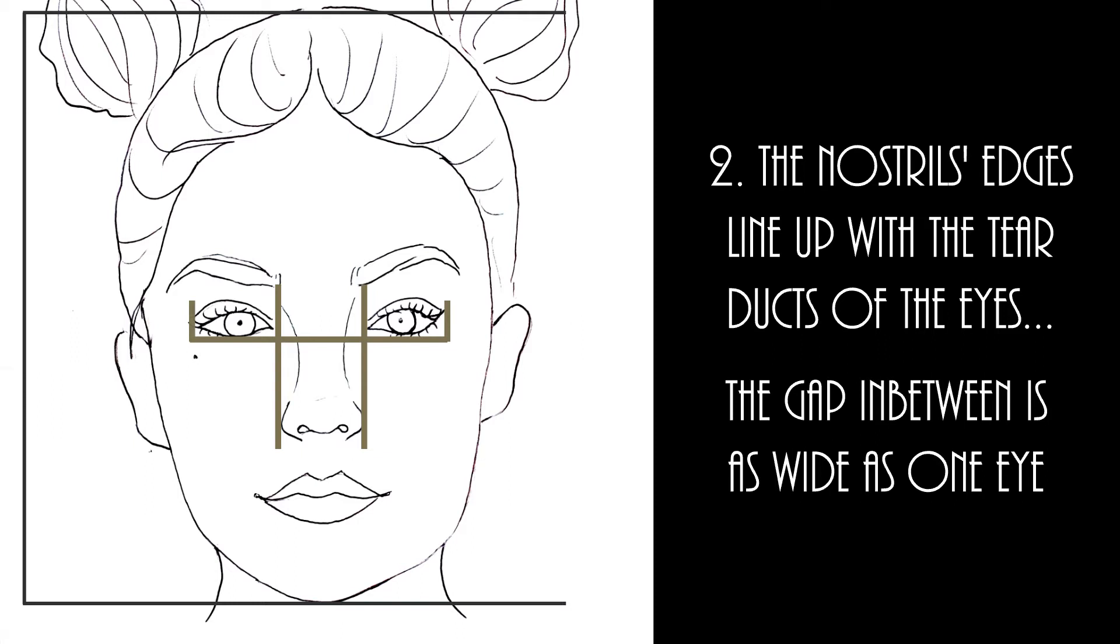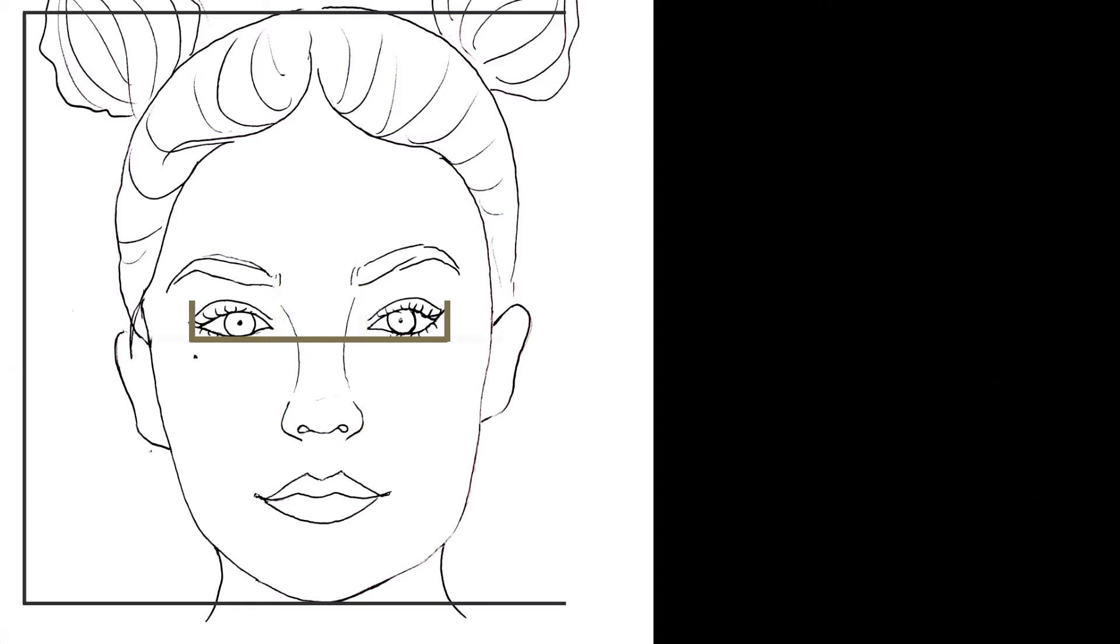The third rule says that the head is about five eyes wide, which means that the distance from eye to ear would be as wide or broad as one eye on each side of the face.